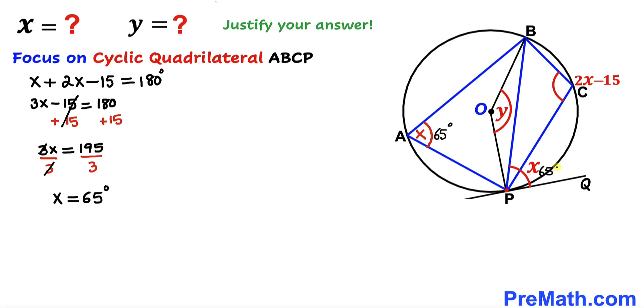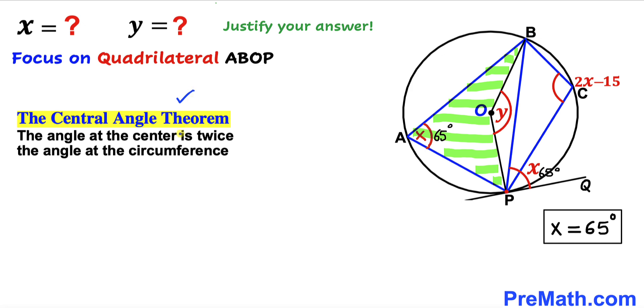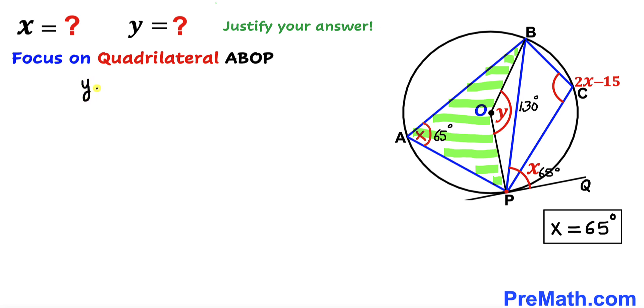Here's our final step. Focus on quadrilateral ABOP and recall the central angle theorem. According to this theorem, the angle at the center is twice the angle at the circumference. In our case, angle Y at the center is 2 times angle X at the circumference. If X is 65, then Y is 2 times 65, which equals 130 degrees.